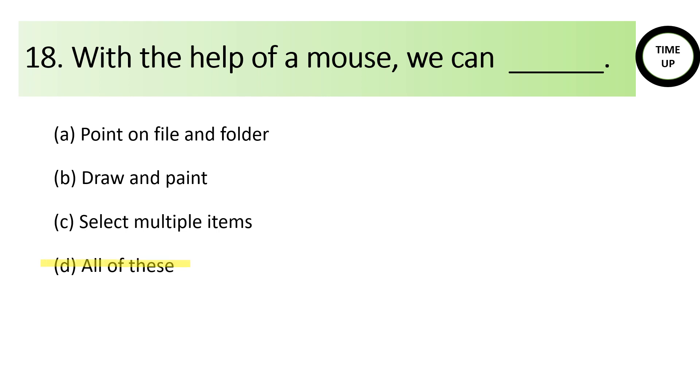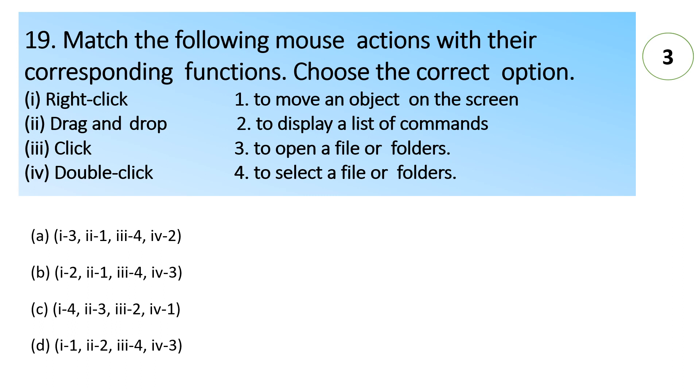Match the following mouse actions with the corresponding functions. Choose the correct option. One right click, two drag and drop, C is click, and D double click. So we need to find out the functions of each one. So here option D is correct. One right click is used to display a list of commands. Two drag and drop is used to move and select an object on the screen. Three click is used to select file or folders. D double click is used to open a file or folders.